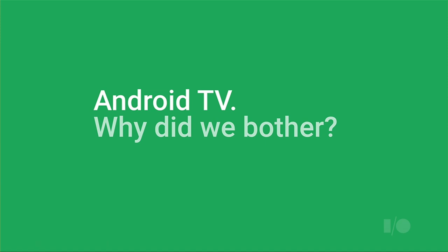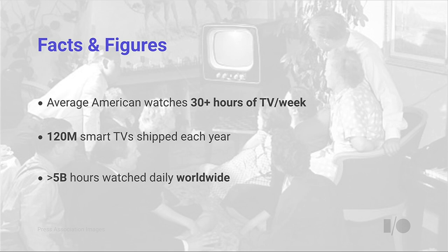Some facts and figures. The average American watches 30 hours of TV a week — a lot of eyeball time. 120 million smart TVs are shipped every year, and more than 5 billion hours are watched daily worldwide in front of the TV. This is a lot of time for people to be engaged in content from Google applications and your applications. These are computing devices now — they aren't just dumb panels picking up over-the-air signal. But there's no standard platform today.